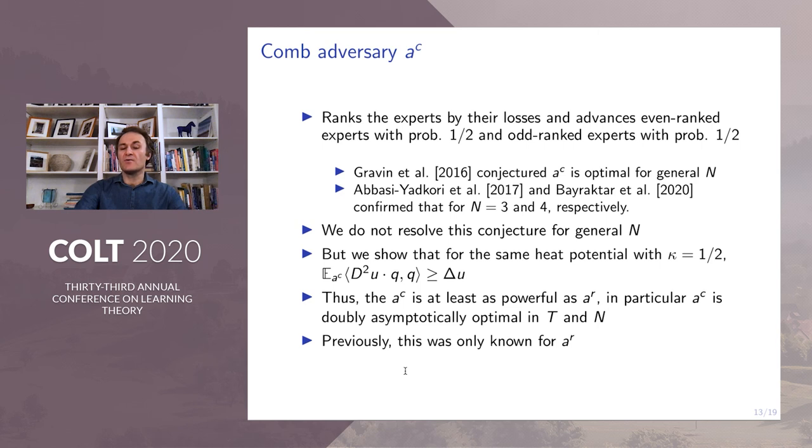Therefore, by our framework, the comb adversary is at least as powerful as the randomized adversary. In particular, the comb adversary is doubly asymptotically optimal in T and N. Previously, this result was only known for the classic randomized adversary.